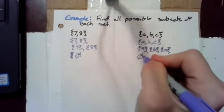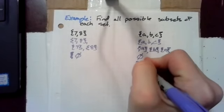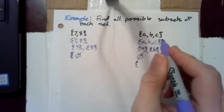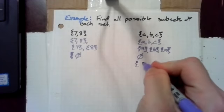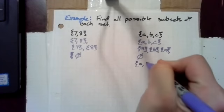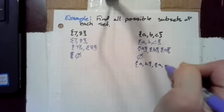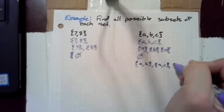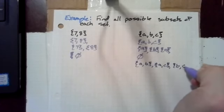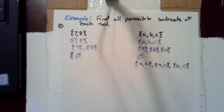But we also have another three subsets, and those are the sets that contain exactly two of the elements in the initial set. So, we've got the set A, B, we've got the set A, C, and we've got the set B, C, for a total of eight subsets.